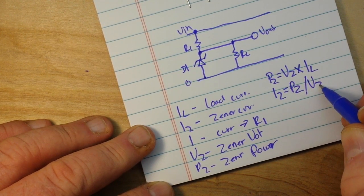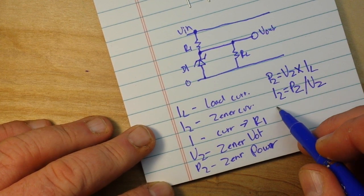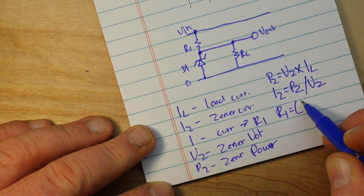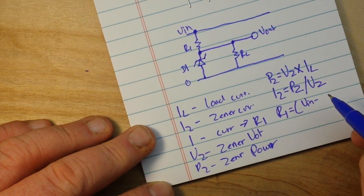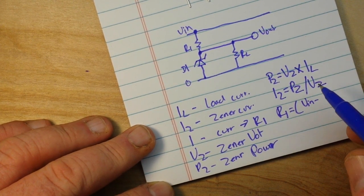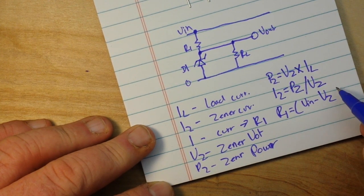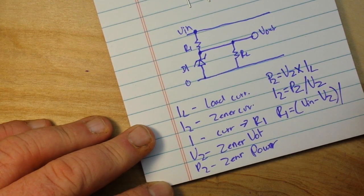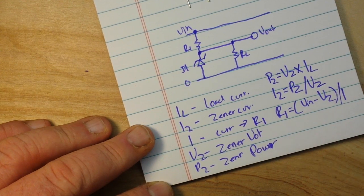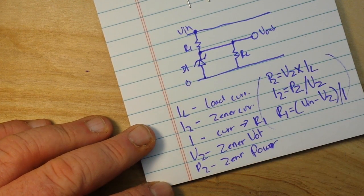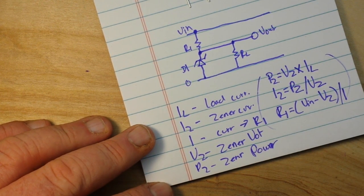And finally, R1 will be equal to Vin minus our Zener voltage divided by the current. And those three little simple calculations there will give you everything you need to do your own little Zener circuit. So let's whip one up real quick.